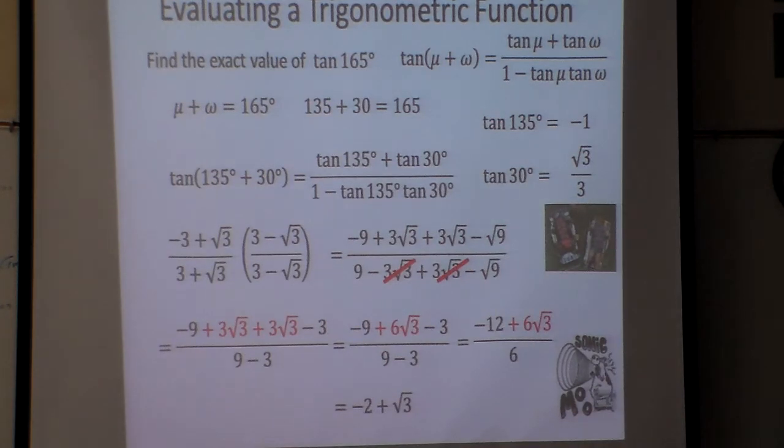So the exact value of the tangent of 165 is negative 2 plus the square root of 3, which I get from using this formula right here, plugging all these numbers in, and then using algebra, and having to use our conjugate to get rid of the square roots down here. Simplified it to that very form right there.